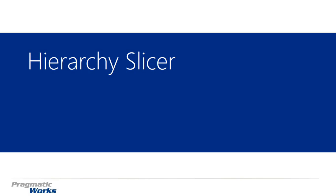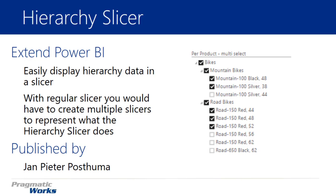Hi, welcome back to the Power BI Custom Visuals course, and in this module we'll be looking at the Hierarchy Slicer. The Hierarchy Slicer is really an interesting visual in that it is a filter — just like a regular slicer inside Power BI — that allows you to filter your data down. The nice thing about it is it allows you to have a hierarchical view of your data in a filter.